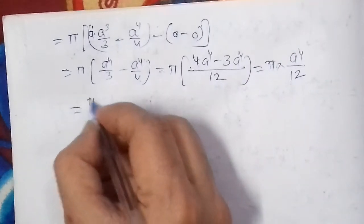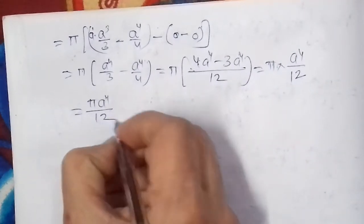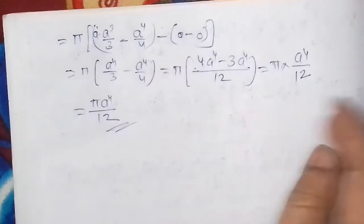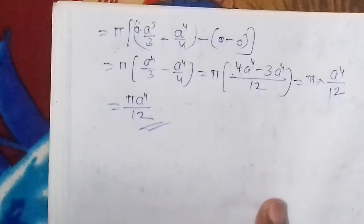The final answer is V = πa⁴/12. Thank you very much for listening. Alhamdulillahi rabbil alameen.